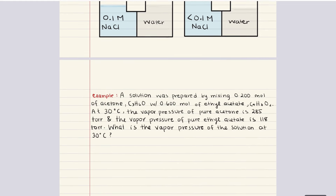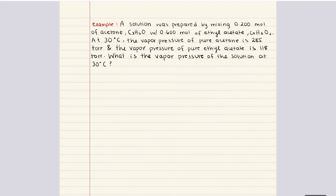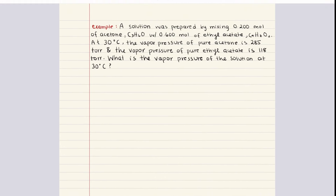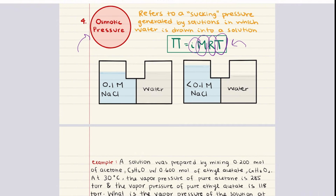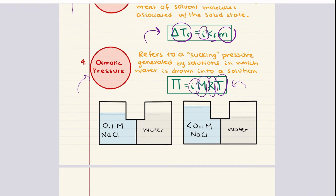With that being said, let's hop into a couple of practice problems. Before we do, I want to note that temperature is in Kelvin and R, our ideal gas constant, you want to use 0.08206 liters times atmosphere over moles times Kelvin so that the units cancel out appropriately to give you osmotic pressure.